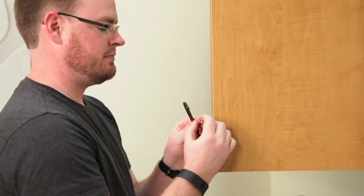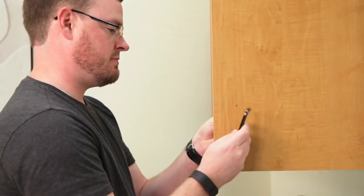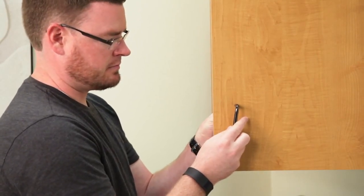Remove the pulls from the shipping position and position the pulls for normal use. That's how easy Clinton cabinets are to install.